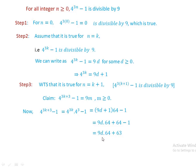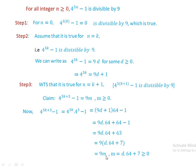Here we have a common factor of 9. This equals 9 times m, where m equals d times 64 plus 7. Since d is greater than or equal to 0, d times 64 plus 7 is also greater than or equal to 0. This implies that 4 to the power of 3k plus 3 minus 1 equals 9m, meaning it is divisible by 9. Therefore the statement is true for all integers n greater than or equal to 0.